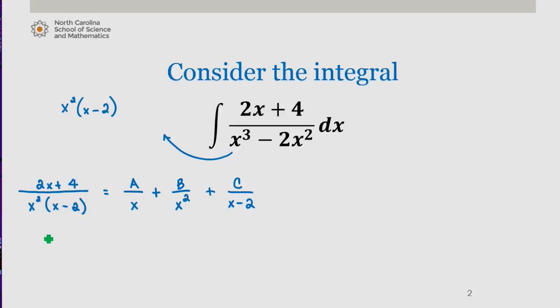I end up with on the left, 2x plus 4 equals A over x times x squared times x minus 2 plus B over x squared times x squared times x minus 2 plus C over x minus 2 times x squared times x minus 2.